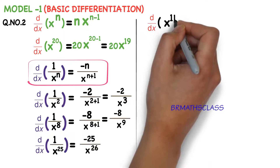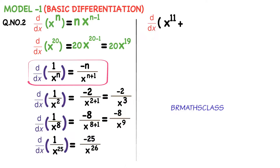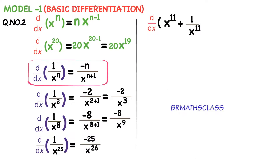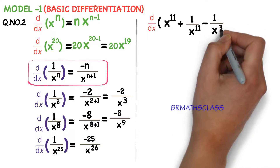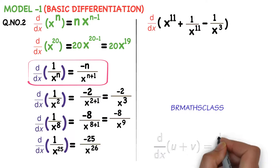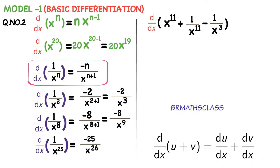We need to find the derivative of x power 11 plus 1 divided by x power 11 minus 1 divided by x cube. We know this formula — we already discussed it in the last class also. D by dx of u plus v is nothing but the derivative of u plus the derivative of v. According to that formula, we need to differentiate each and every function.